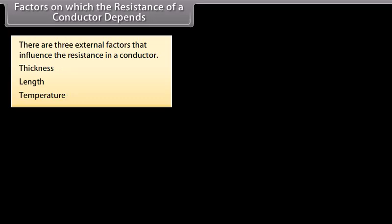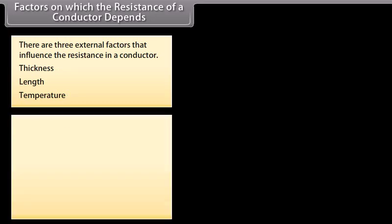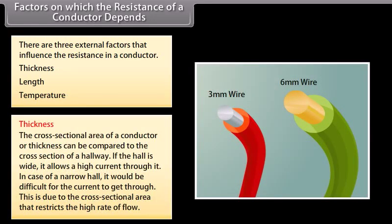This fourth factor is considered an internal factor rather than an external one. Thickness: the cross-sectional area of a conductor, or thickness, can be compared to the cross-section of a hallway. If the hall is wide, it allows a high current through it. In case of a narrow hall, it would be difficult for the current to get through. This is due to the cross-sectional area that restricts the high rate of flow.